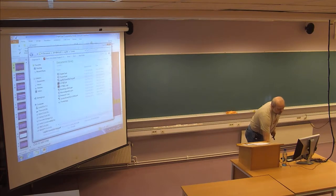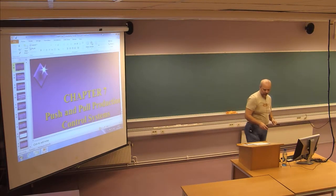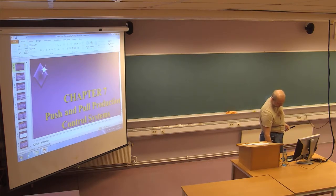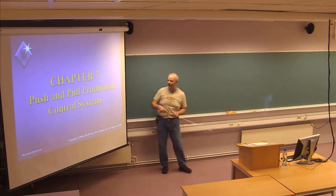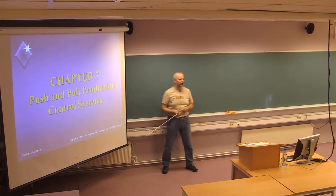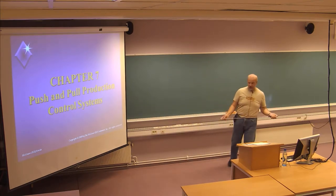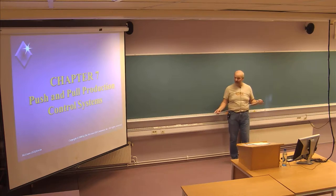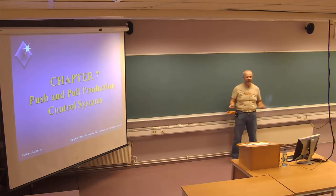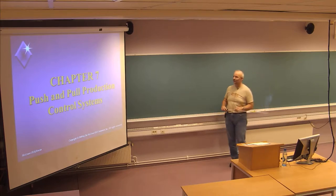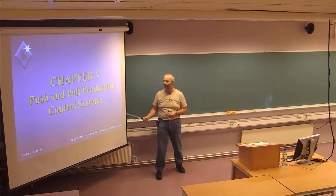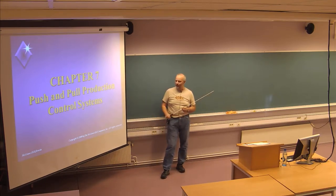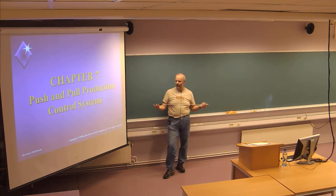Today we will continue on Chapter 7, which we started last week. I showed different methods to solve the so-called lot sizing problem, which you should also use in your assignment. The Silver Meal method, Part Period Balancing, and the Least Unit Cost method were presented last week. Today I will go through some more theory on push and pull production control systems, and also give some theory and show some other methods for solving these.